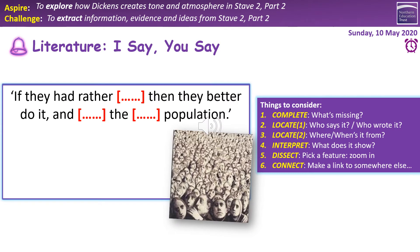Fifth quotation. The missing words: 'If they'd rather die, they had better do it and decrease the surplus population.' It is, of course, Scrooge, talking to the portly gentlemen again in Stave 1. What does it show? His callous disregard for the poor in society — he sees them as a group rather than as individuals, and doesn't value life and death as he perhaps should. A feature: the collective pronoun 'they' — he sees them as a group, defined by their groupness, and it's when he gets the revelation of them as individuals that he begins to change. The best link is to when he sees Ignorance and Want, and Tiny Tim in Stave 3, where it becomes suddenly personal — he cares about them as individuals.